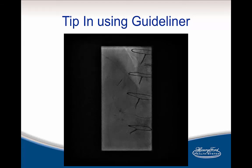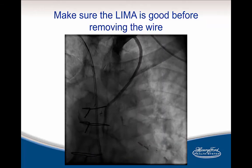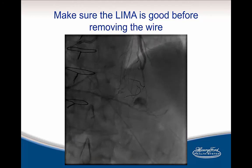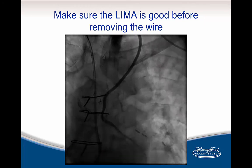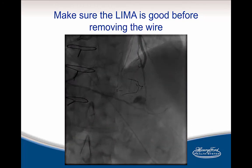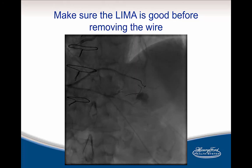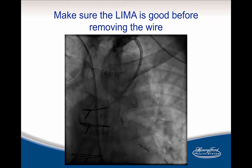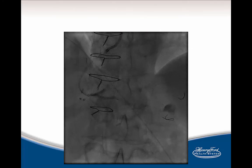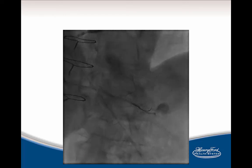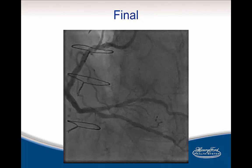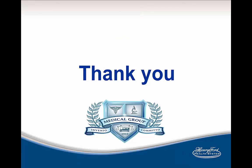Here is a guide liner in the distal RCA, and we're wiring the posterolateral branch. After the tip-in, we changed to antegrade wiring of the PDA. The retrograde wire was removed, and before removing the gear completely from the LIMA, we took a picture to confirm there was no LIMA dissection. We obtained antegrade wiring in both the PDA and the posterolateral branch. The rest of the procedure was completed antegrade, with a guide liner helping through the tortuosity of the RCA to deliver stents through the calcification. These are the final pictures. Thank you so much.